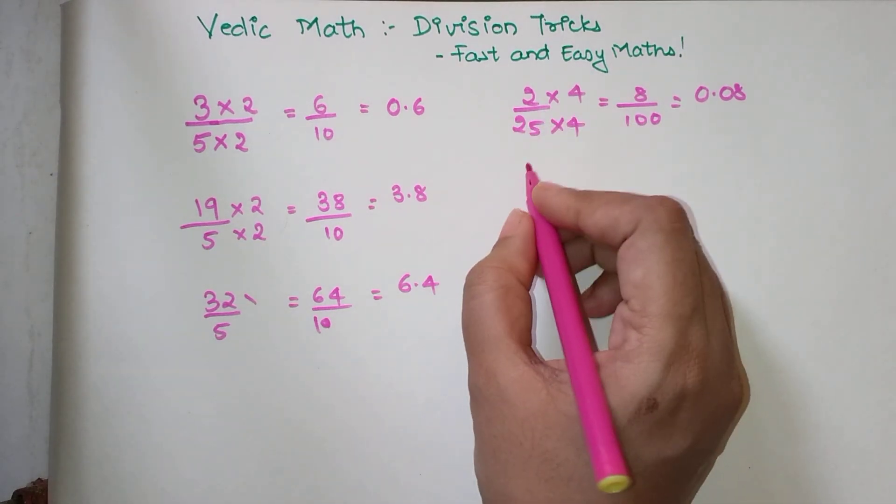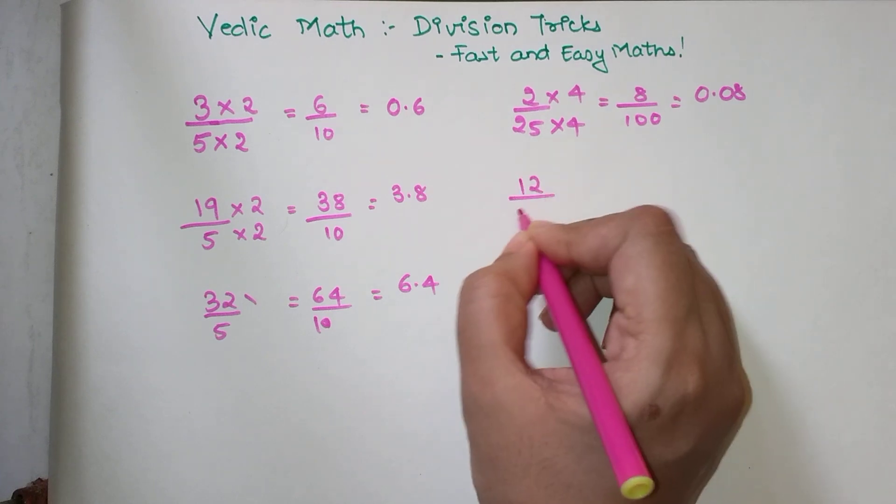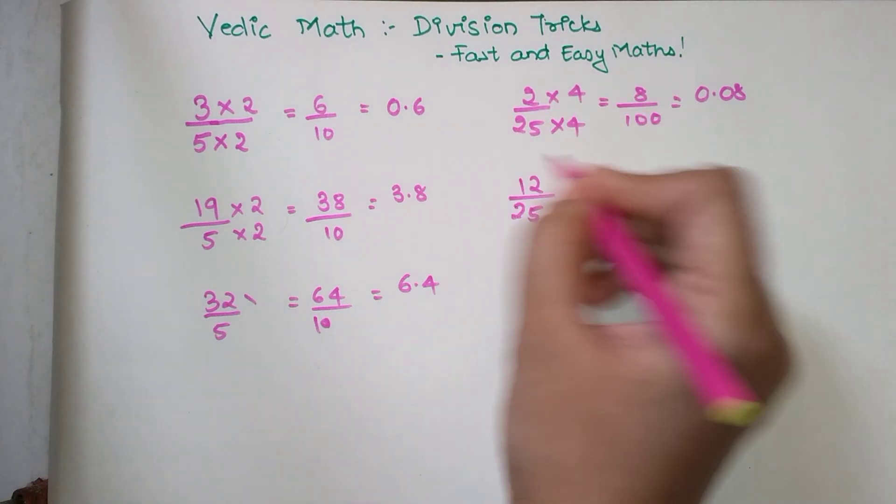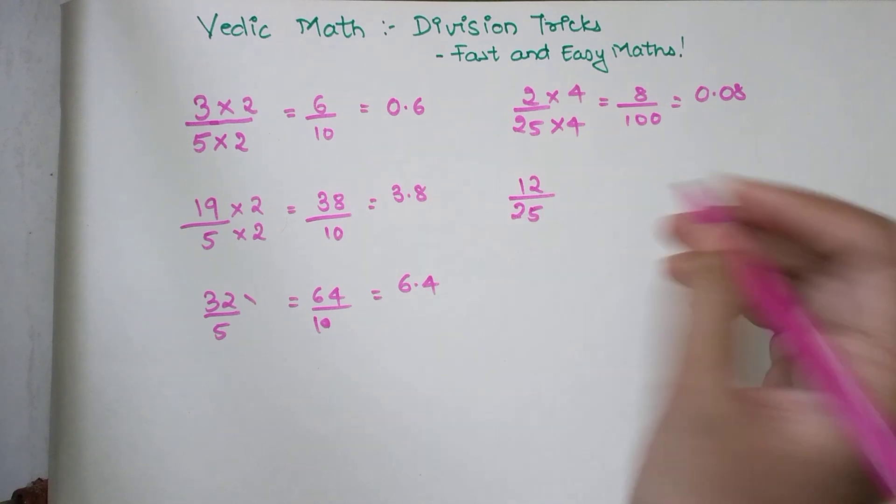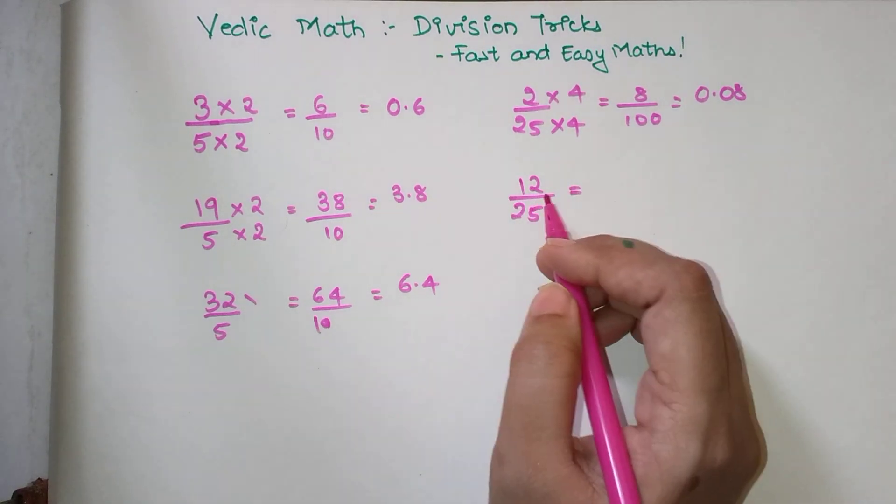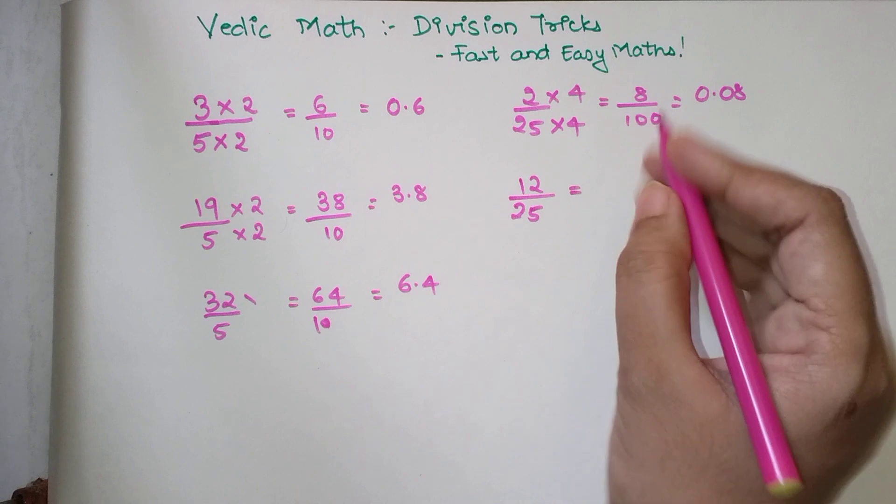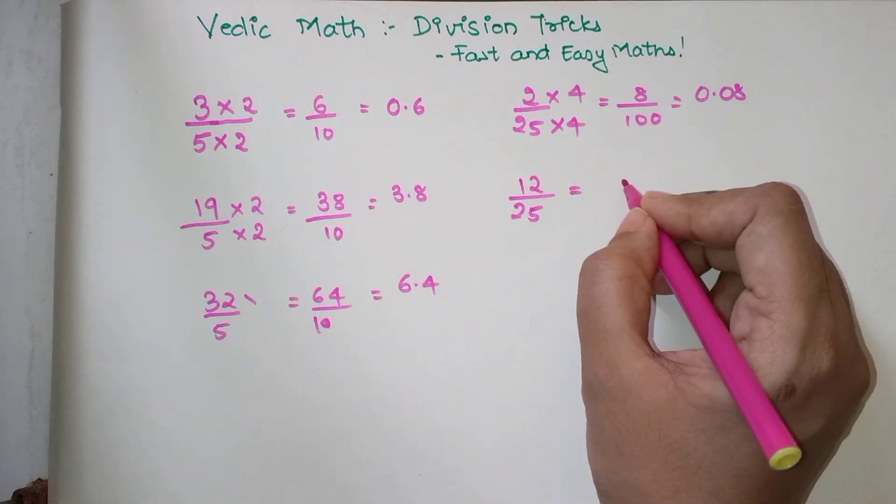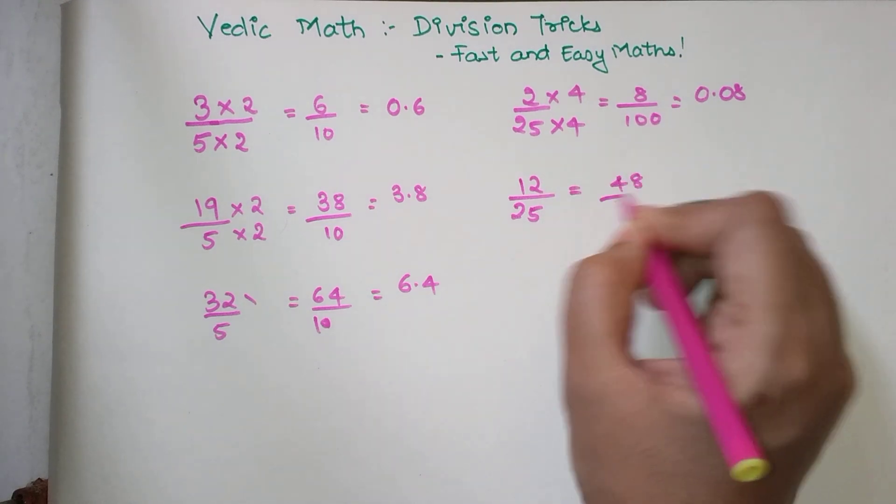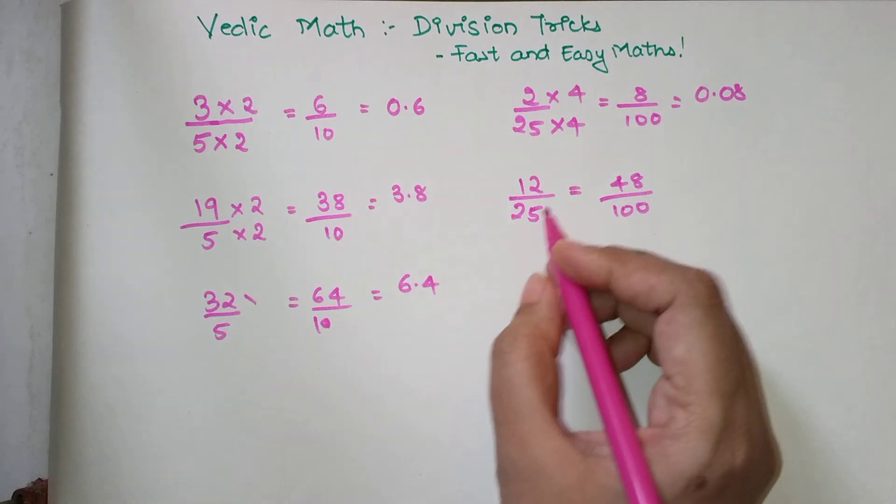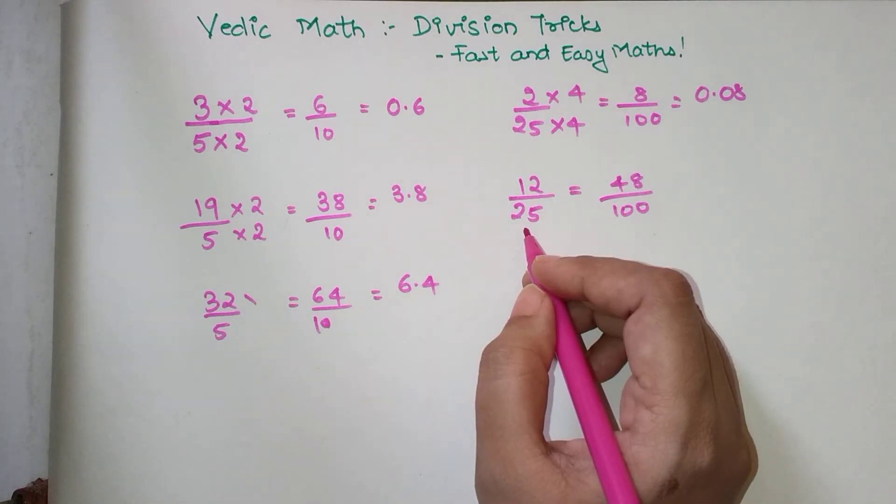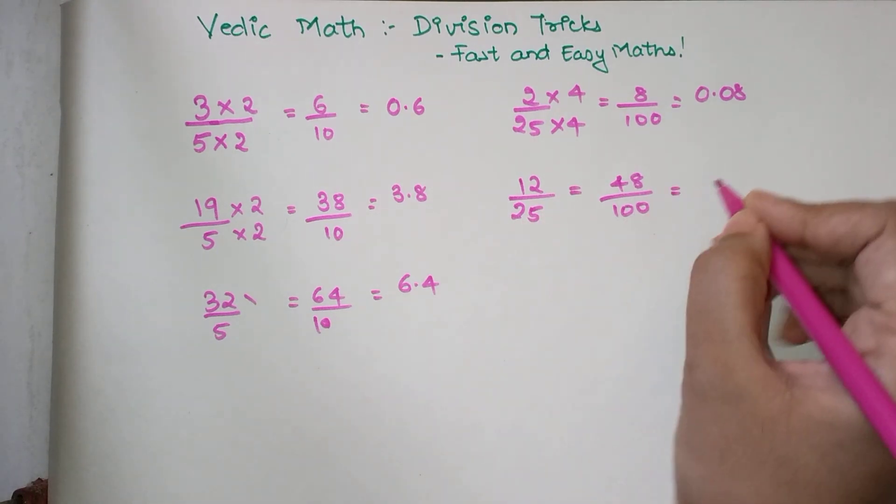If we have 12 upon 25, we know the numerator has to get multiplied by 4. So 4 into 12 is 48 upon 100, and my final answer is 0.48.